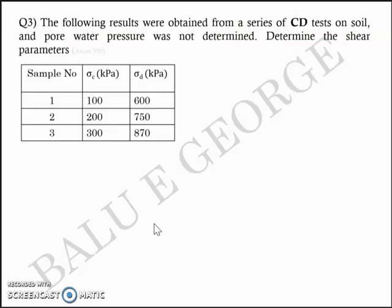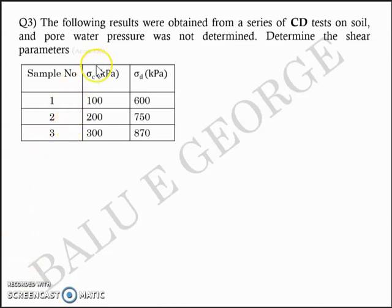Question number 3. The following results were obtained from a series of CD tests (consolidated drained tests) on soil, and the pore pressure was not measured. Determine the shear parameters. You have three samples: sigma C (confining stresses) are 100, 200, and 300 kilopascal, and sigma D (deviator stresses) are 600, 750, and 870 kilopascal, respectively, for samples 1, 2, and 3.